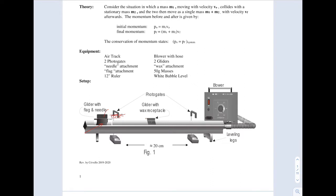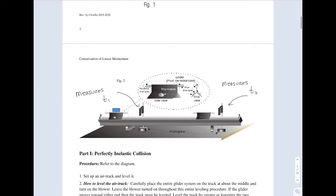That will enable you to find the speed of the glider as it passes through the photo gate. Remember, speed is distance over time. Because the glider is going through the photo gate at constant speed, the distance you measure will be the length of the flag — we call that length L — and the photo gate measures that time.